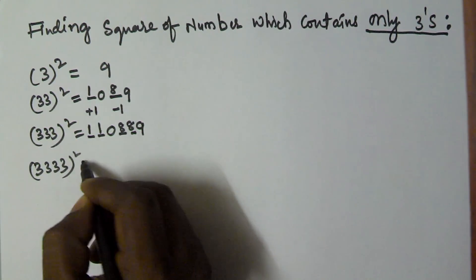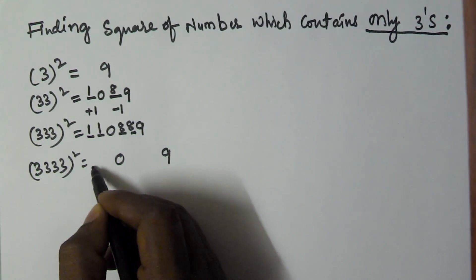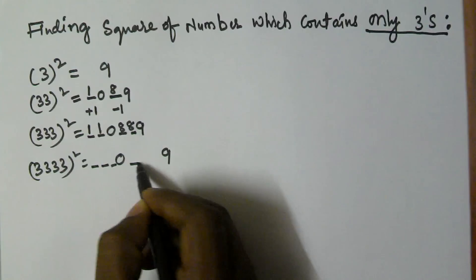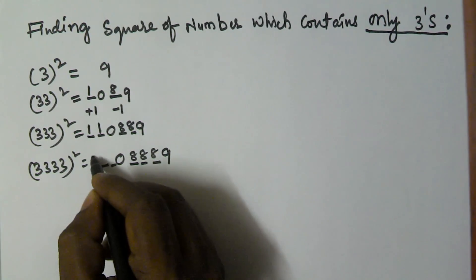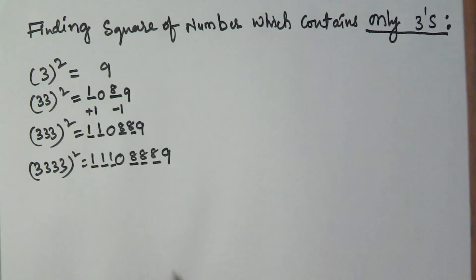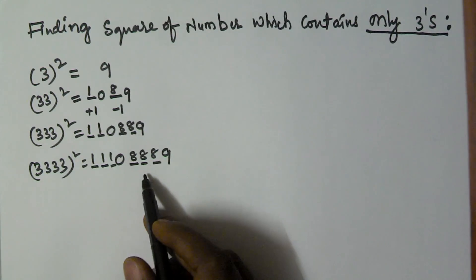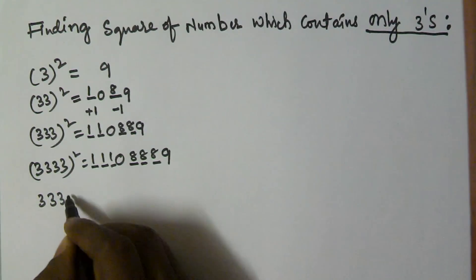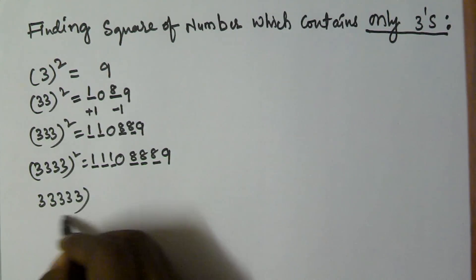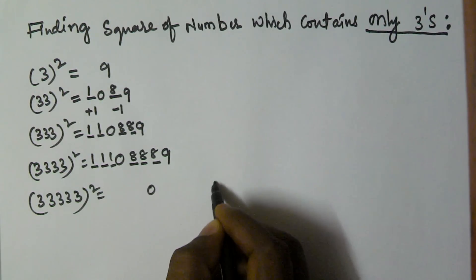In the same manner, for 3333 squared — we have 4 digits, so we take 3 spaces on each side. We fill 111 on the left and 888 on the right. So 3333 squared is equal to 11108889.